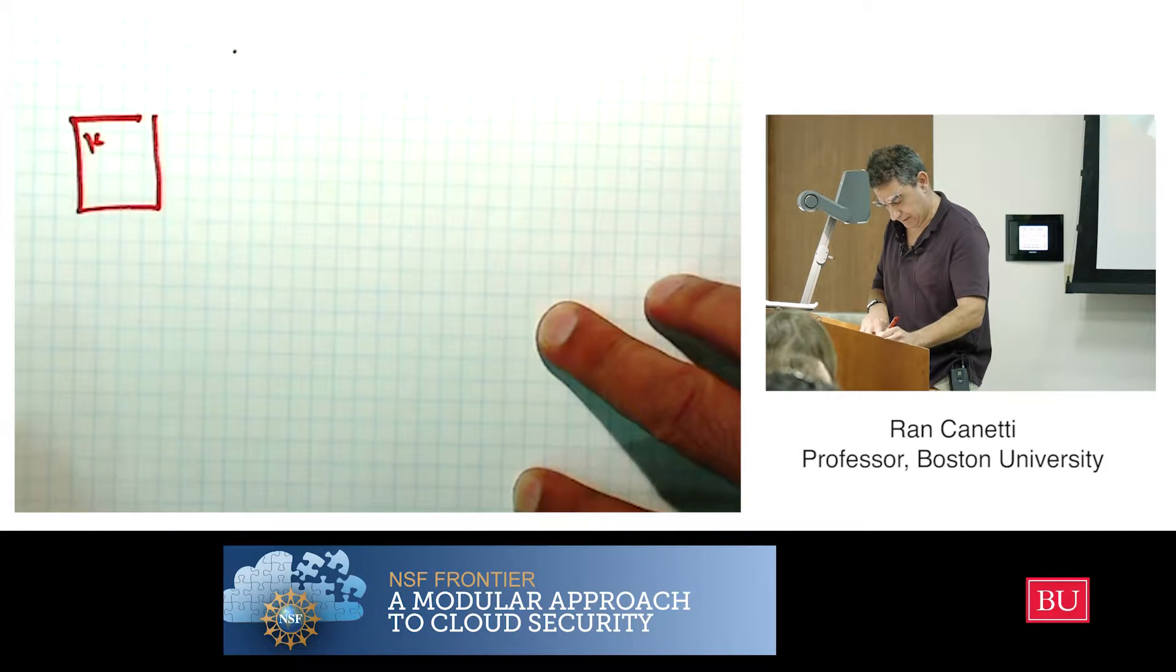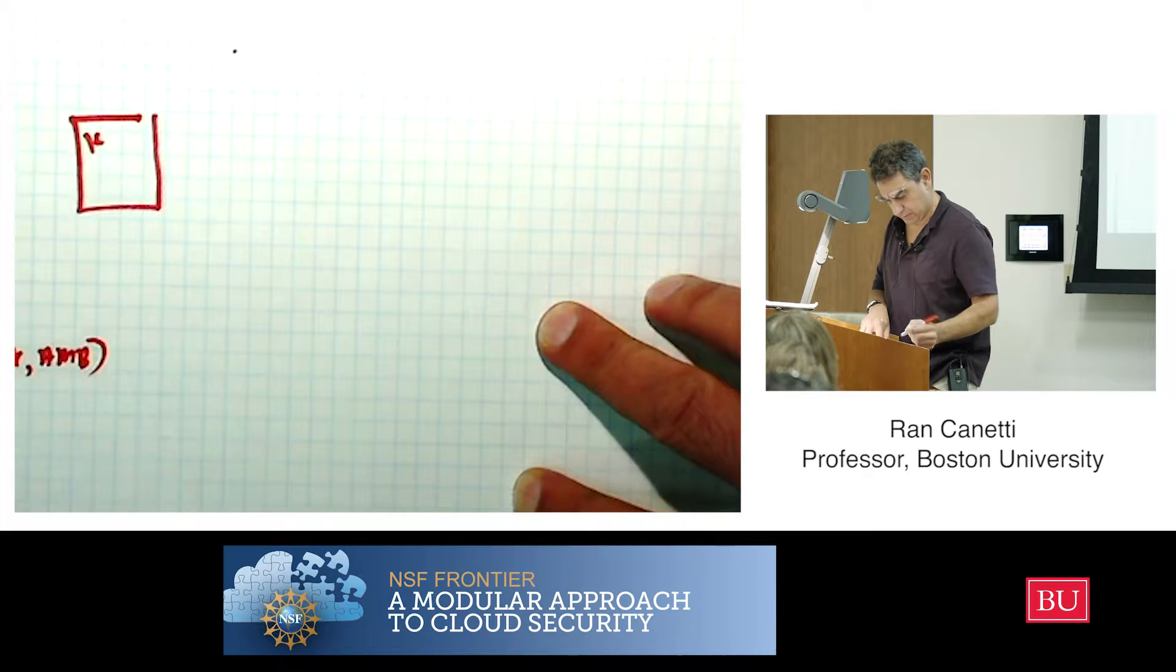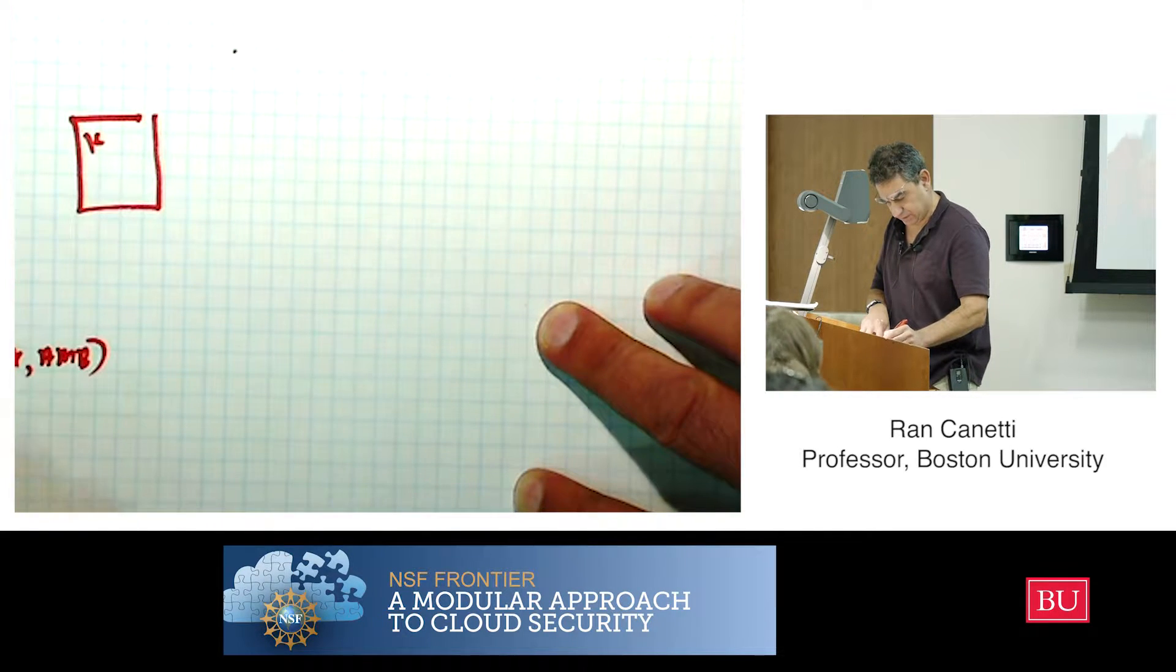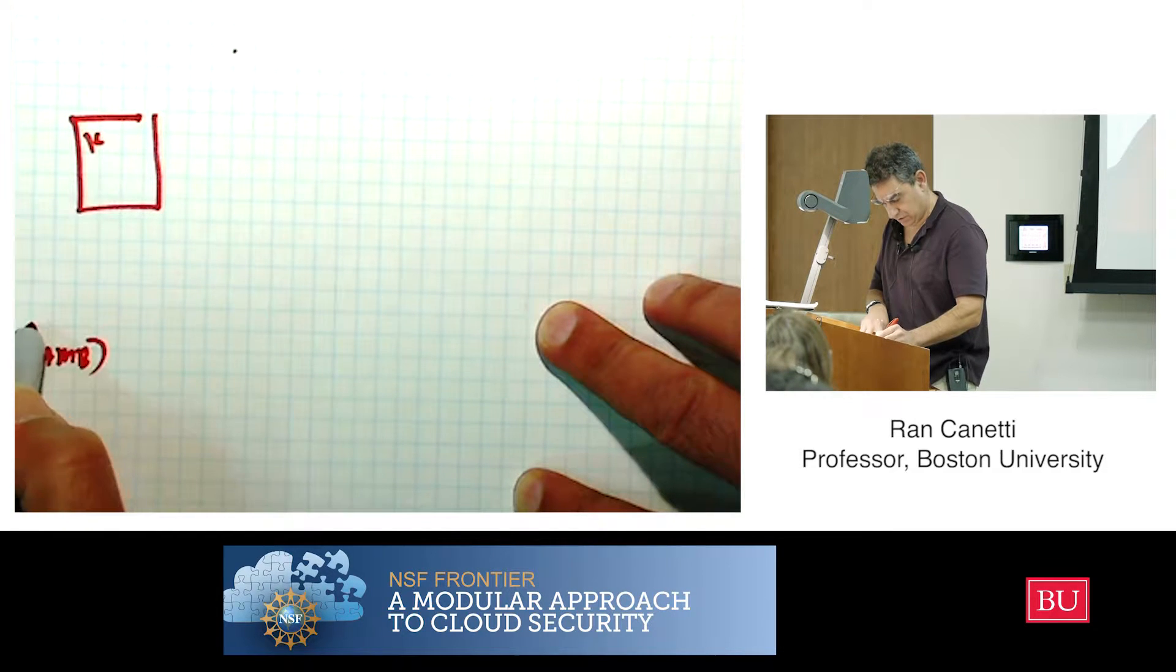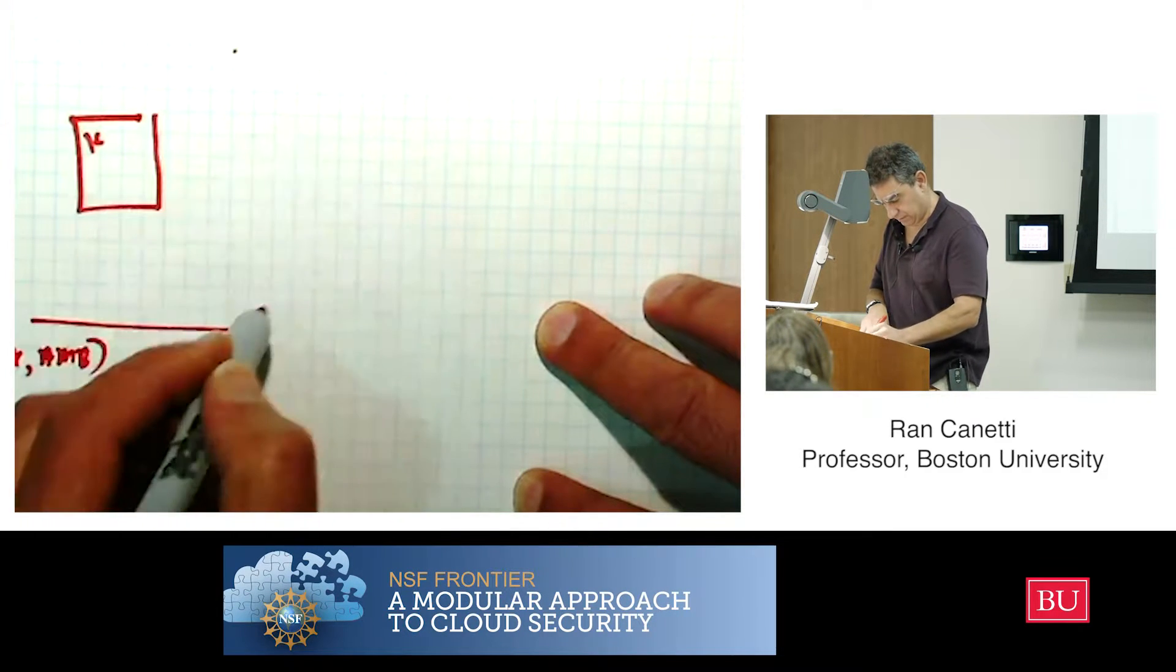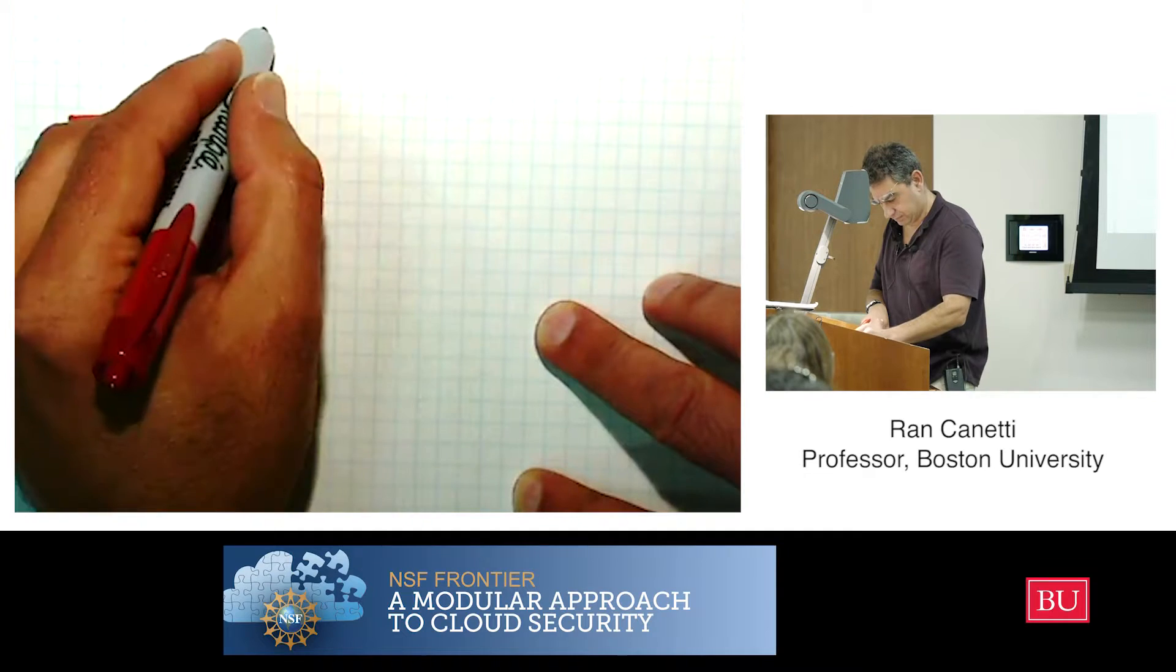T equals the MAC with key K on A, M, B. And this is going to be sent to the environment.